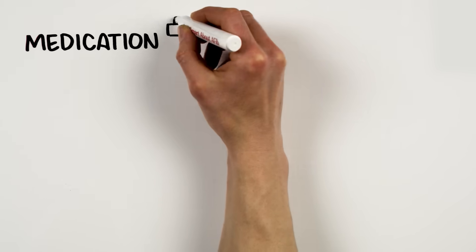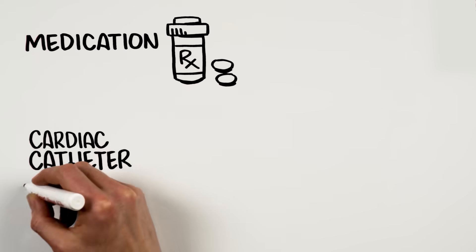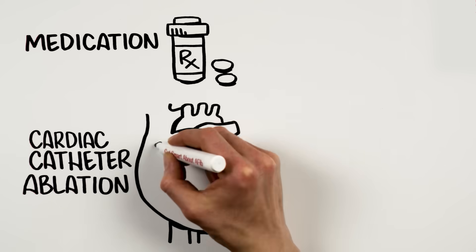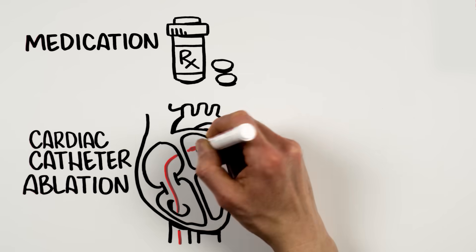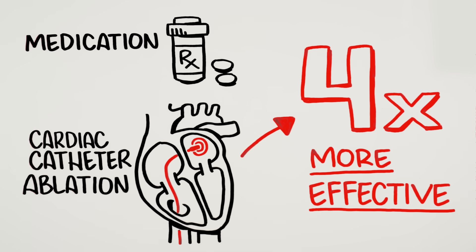Fortunately, you have options including medication and minimally invasive procedures like cardiac catheter ablation. Catheter ablation can be four times more effective than antiarrhythmic medication alone at preventing the return of the heart palpitations associated with AFib.